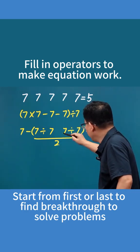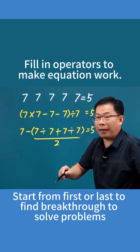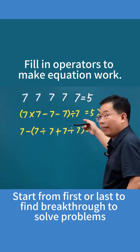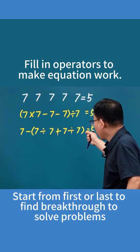7 divided by 7 is 1, and another 7 divided by 7 is also 1. Add the two together, and you get exactly 2, right? So 7 minus that number equals 5, which works perfectly.